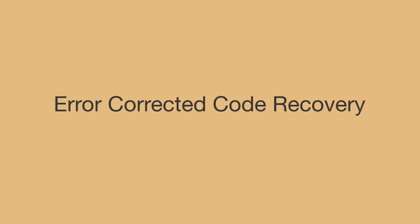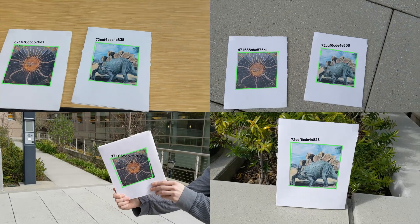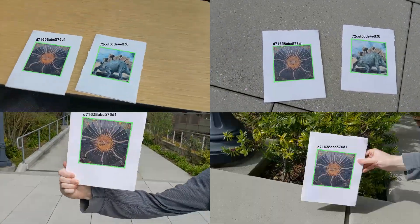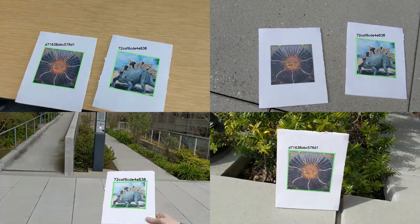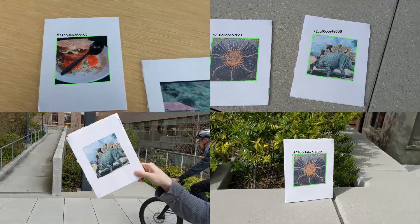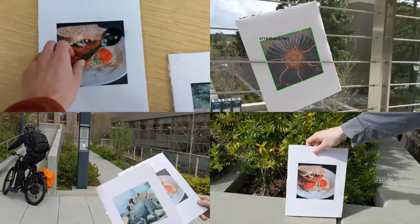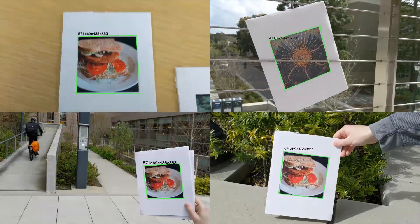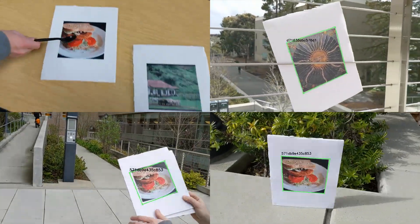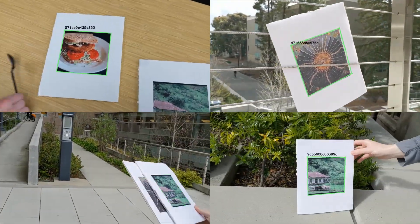Given 100 total bits and at least 95% accurate recovery, we can use error correcting codes to guarantee perfect recovery of a 56-bit long message. This is enough information to apply a unique code to every image on the internet.